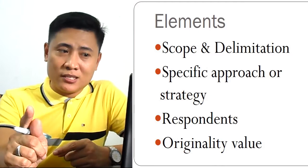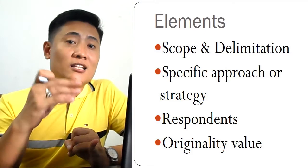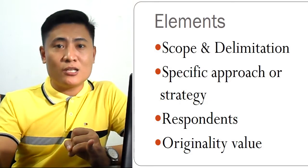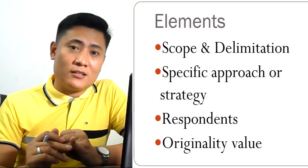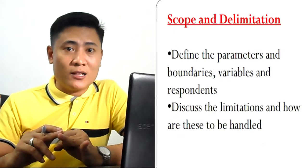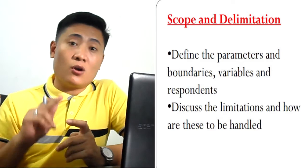So these are the things that you must consider as parts of the research. This is an integration of the traditional parts of research to that of an action research: scope and delimitation, the specific approach or strategy that you will be dealing with in doing your research, and of course the respondents and originality value.